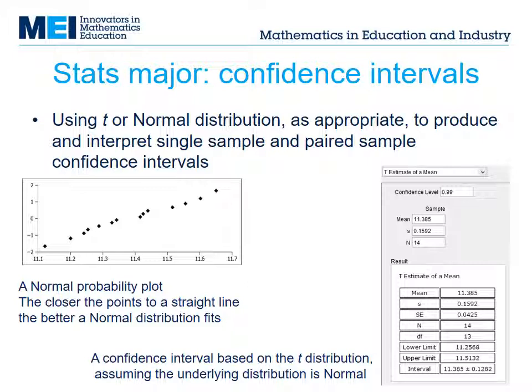We also expect students to be able to interpret other output from software. This is an example from GeoGebra, free software, giving a confidence interval based on the t-distribution for the same data.